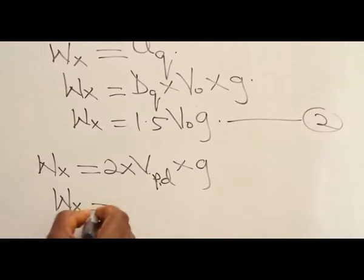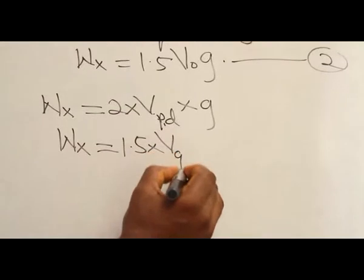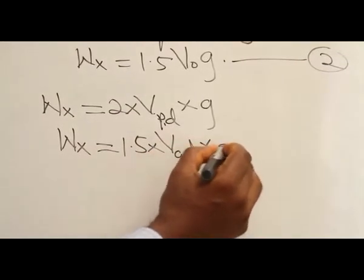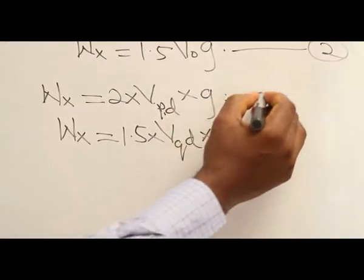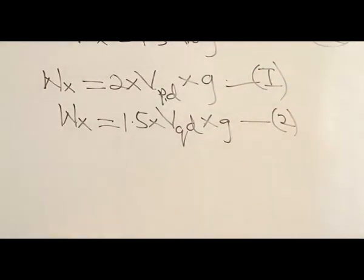Also, this is 1.5 times volume of liquid Q displaced times G. These are the two equations written in a different form.